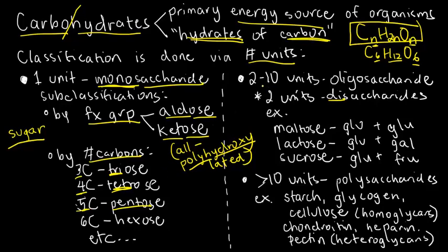If I have more than one unit — specifically two to ten units — we have what we call oligosaccharides. Oligo literally means few. Several popular biochemistry textbooks agree that the qualifying number for oligo is two to ten, though some use different numbers. The most popular oligosaccharides are the disaccharides, containing two units. Notably, all three of the most popular disaccharides contain glucose.